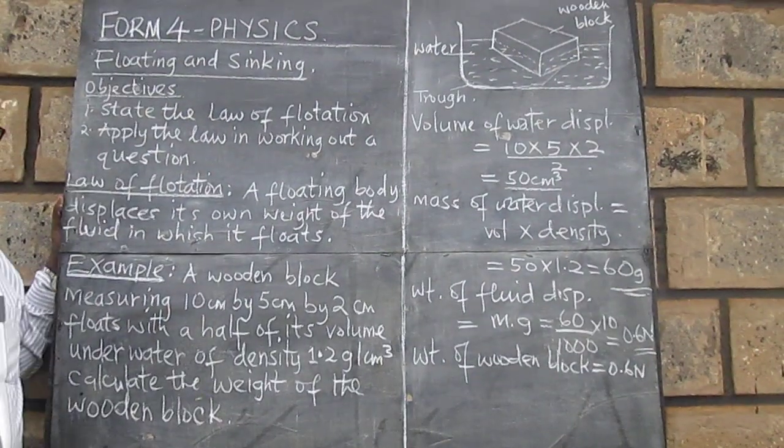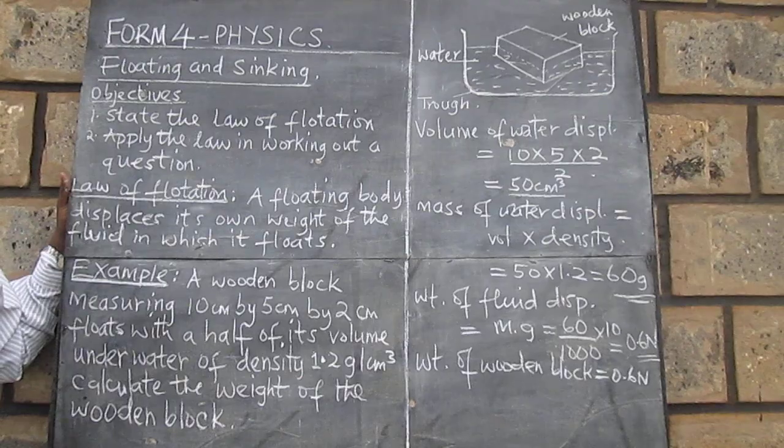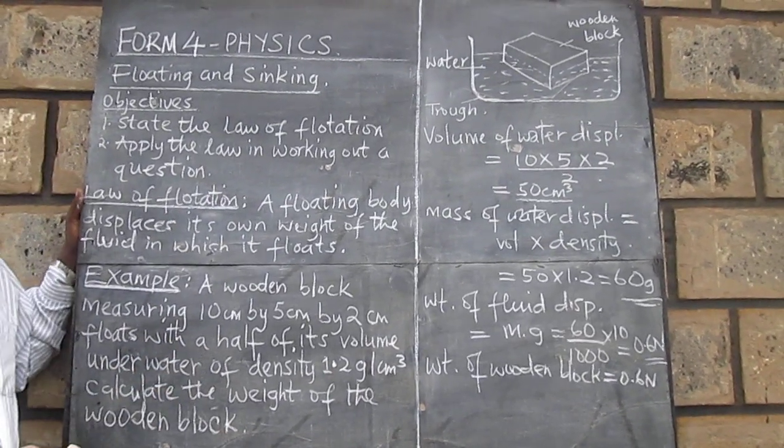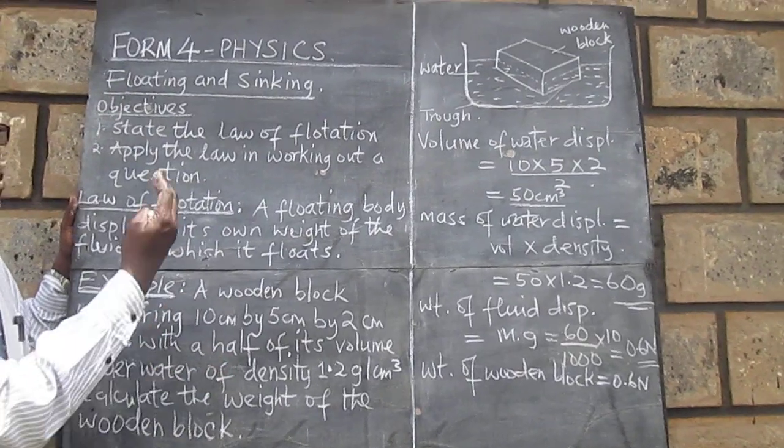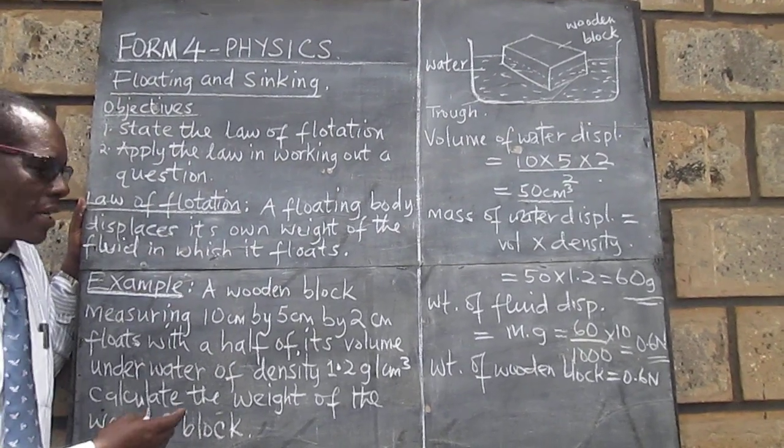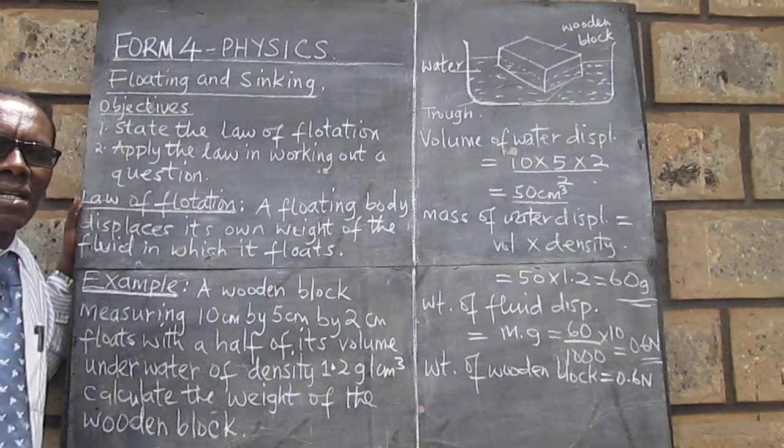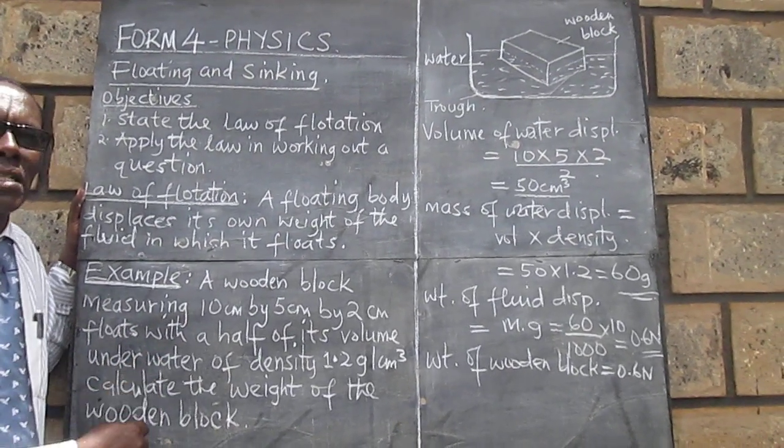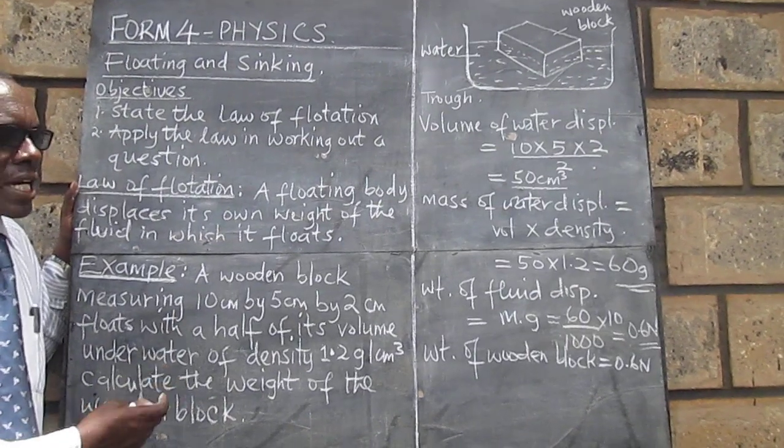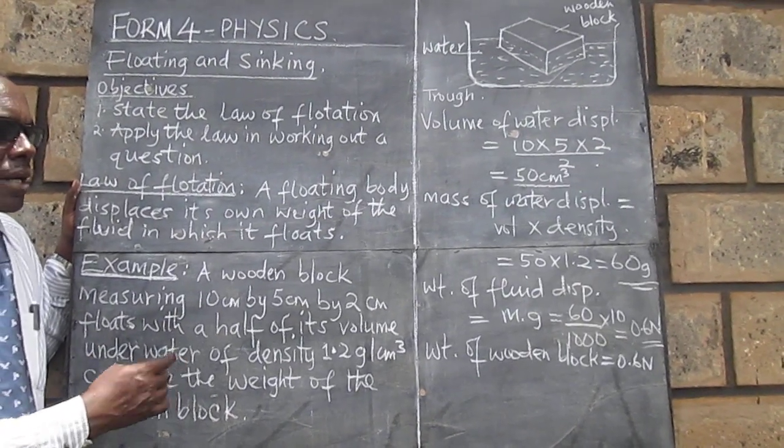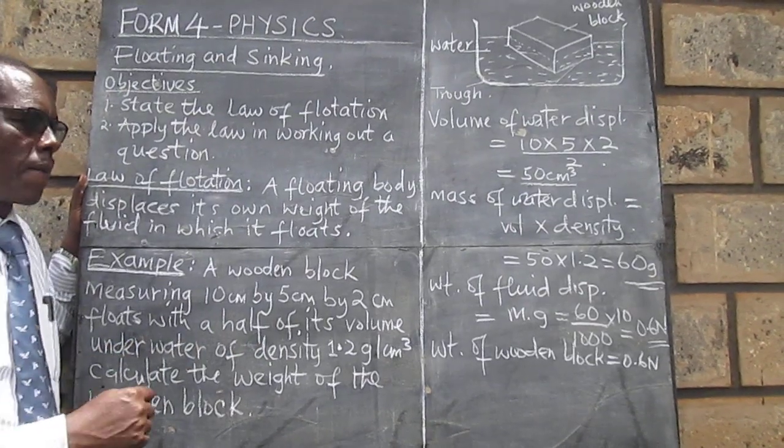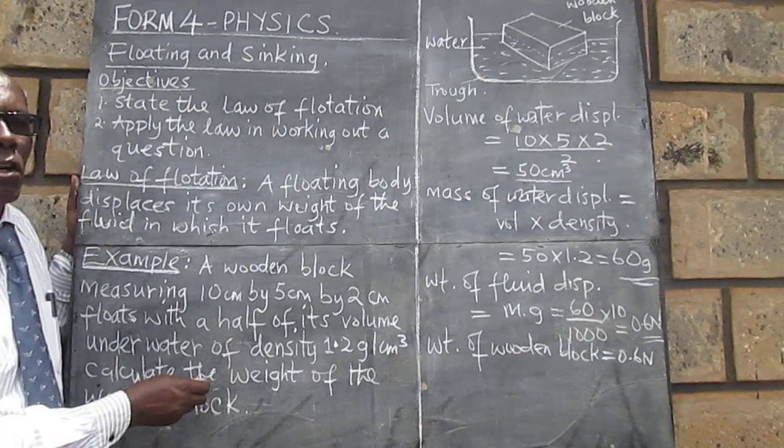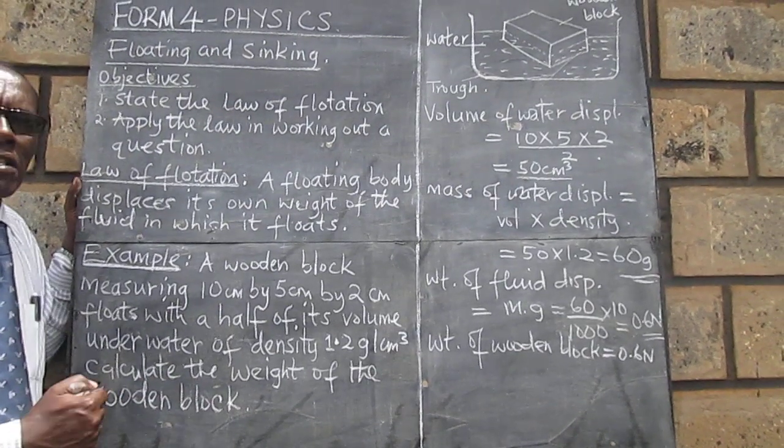So we are going to stop here. And for your assignment, for you to see whether you followed what we have done. Suppose the same block was floating in ethanol of density 0.8. Would its weight change? What would change in this case? So work out that. And then subscribe so that we can continue discussing this. In the next lesson, we are going to look at Archimedes' Principle.